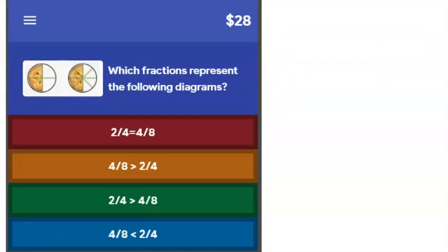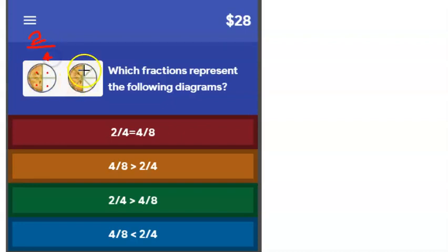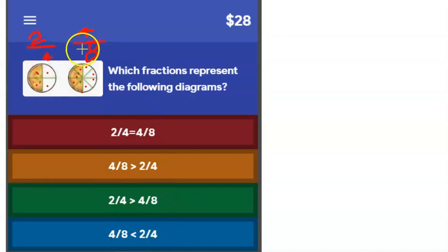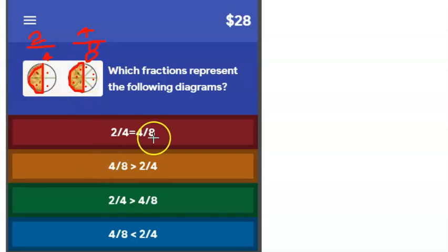Which fractions represent the following diagrams? Looking at the first piece of pizza: two pieces shaded out of four total — that's two fourths. On the second: four pieces shaded out of eight total — that's four eighths. Looking at how much is left, both pizzas have the same amount remaining, which means two fourths and four eighths are equal to each other.